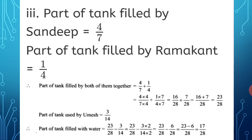23 upon 28 minus 6 upon 28 equals 17 upon 28. This is the fraction of the tank that still has water after Umesh used his portion.